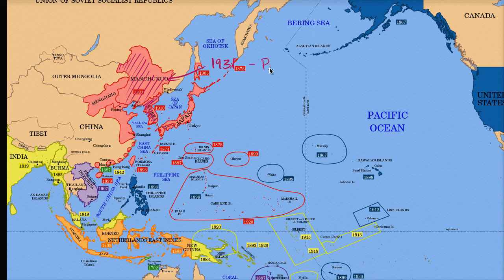When we call something a puppet state, it means that there's a government there and they kind of pretend to be in charge, but they're really controlled like a puppet by someone else. And in this case, it is the Empire of Japan.